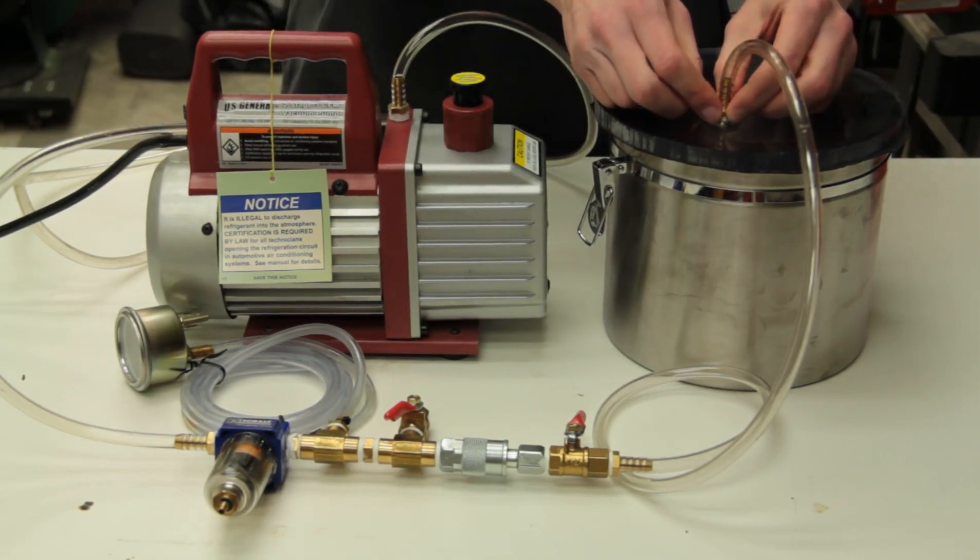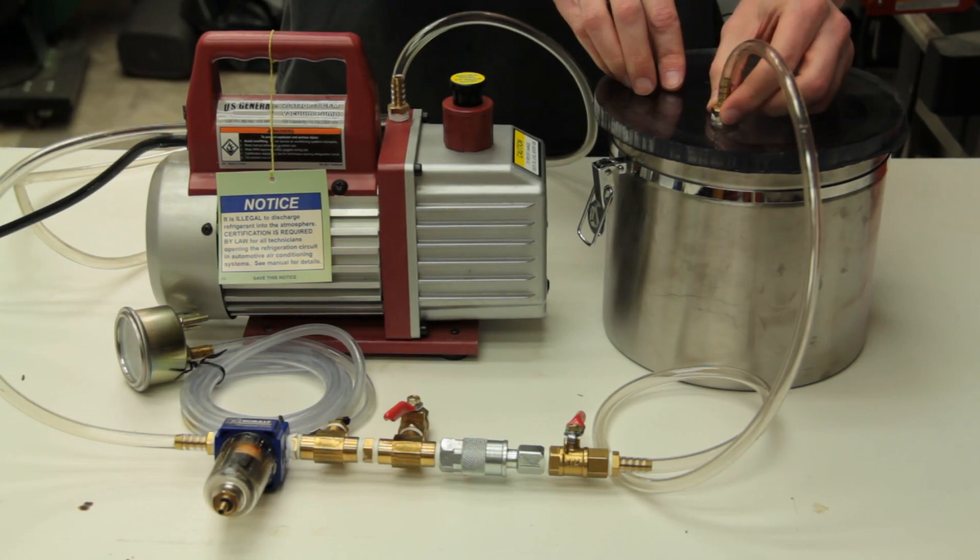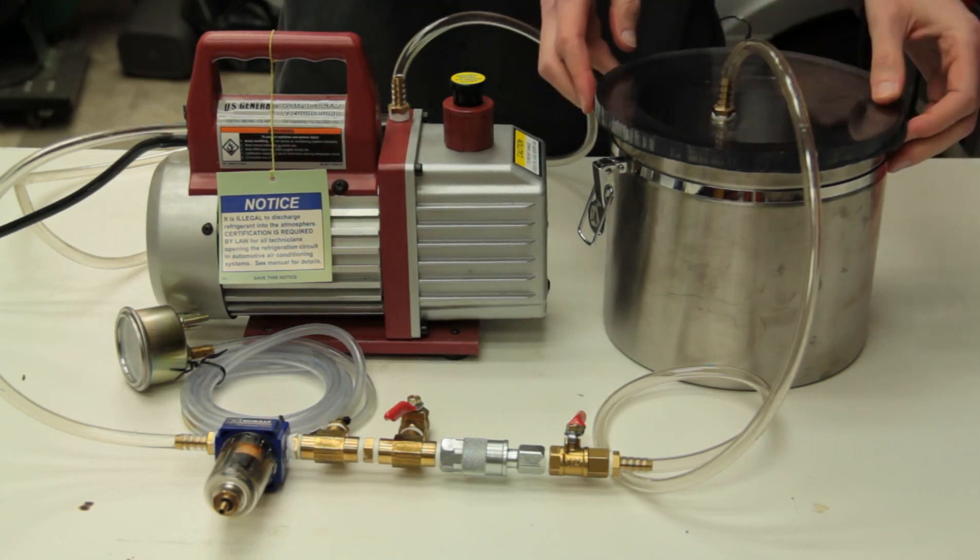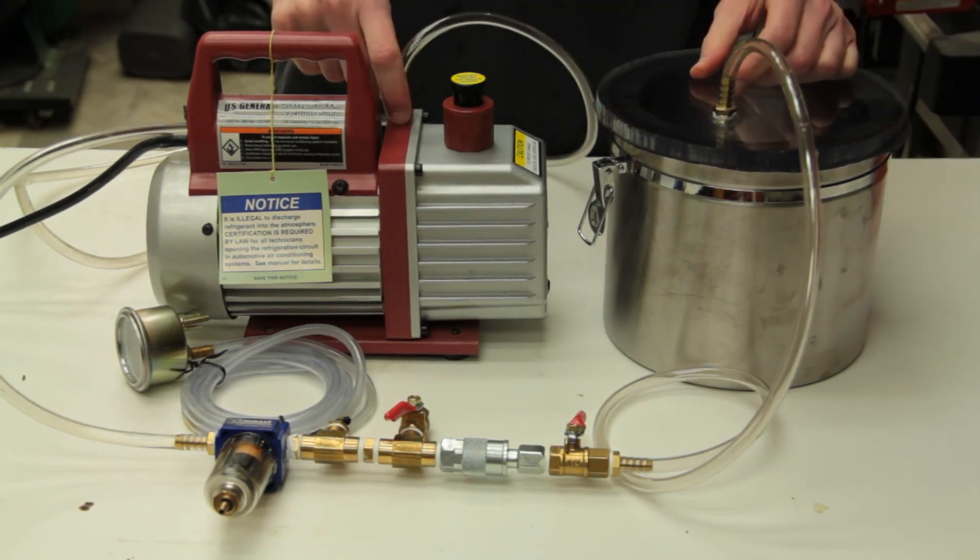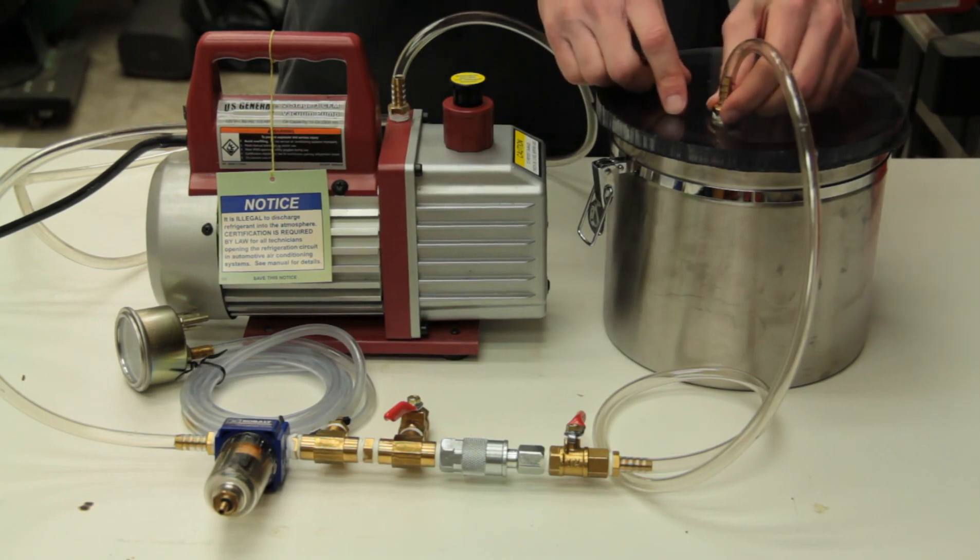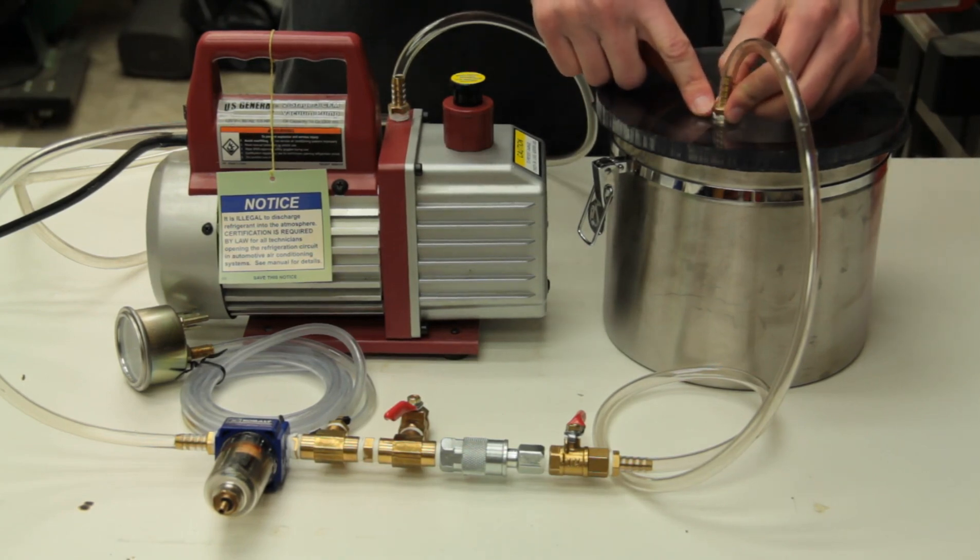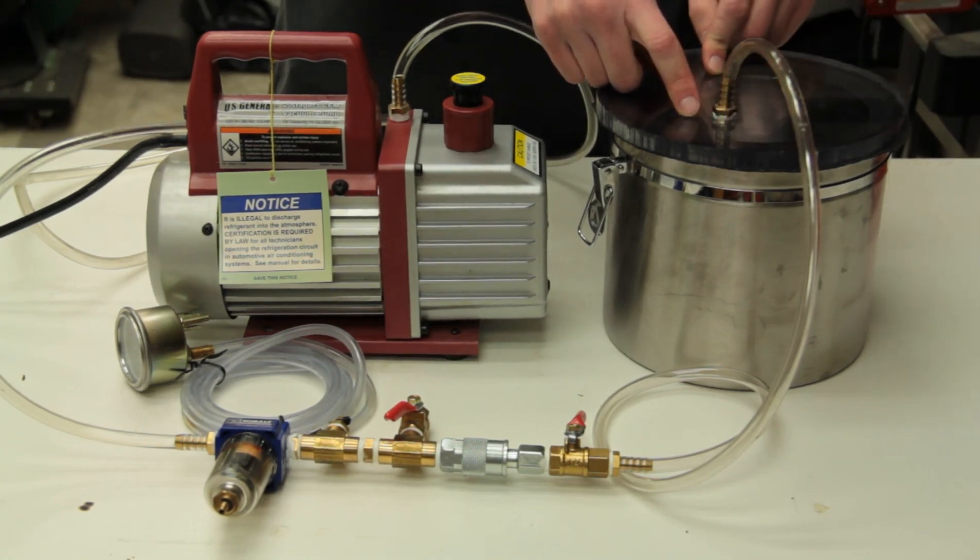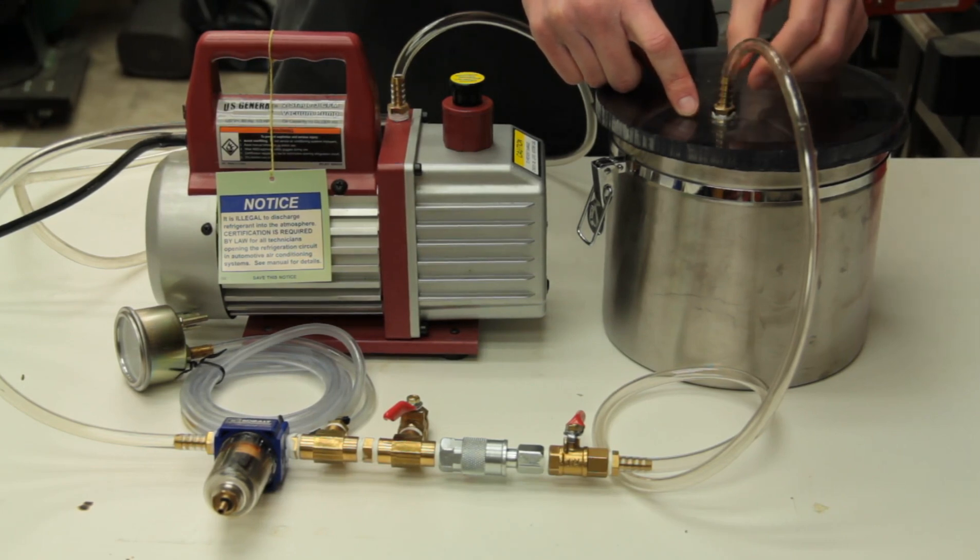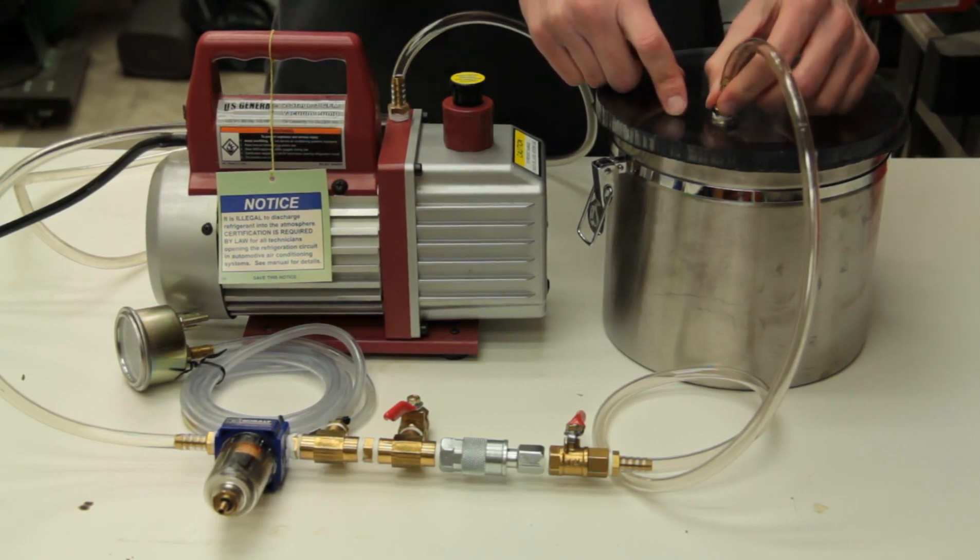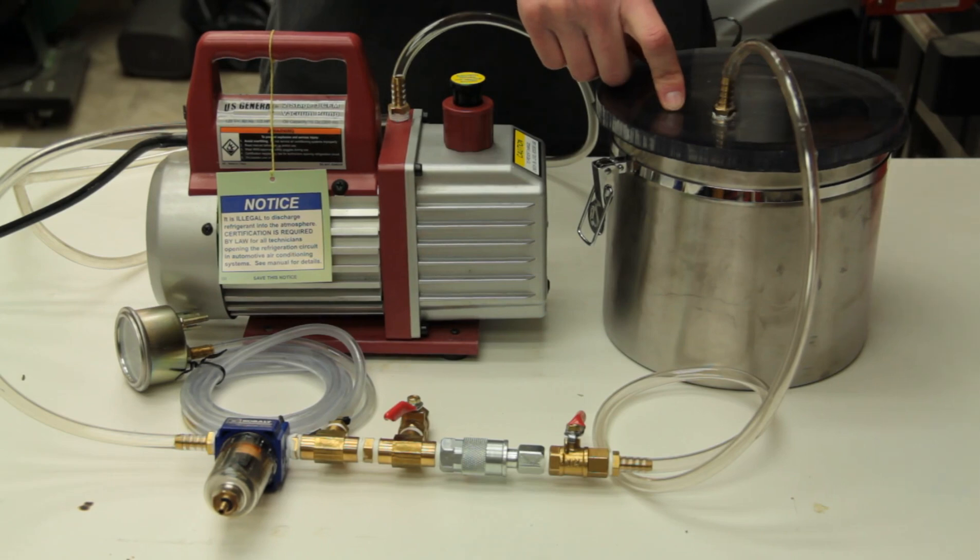Getting the fitting in here is probably one of the most annoying aspects of a project like this. It's up there with getting this out. You'll want the fitting to seal onto this lid. Now, because we are drawing a vacuum, the forces in operation would be trying to pull the fitting into the container, not blow it out.